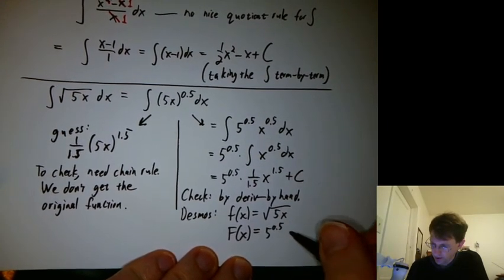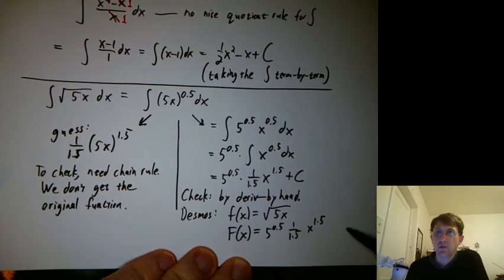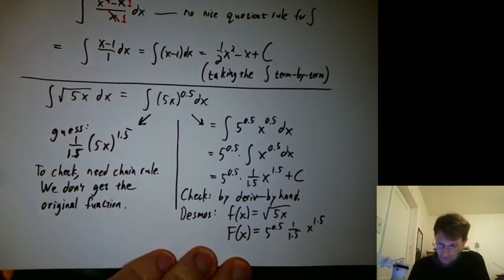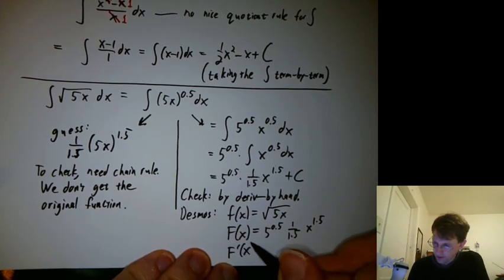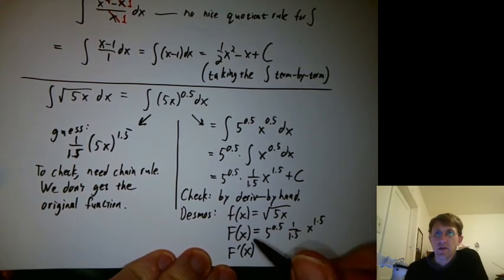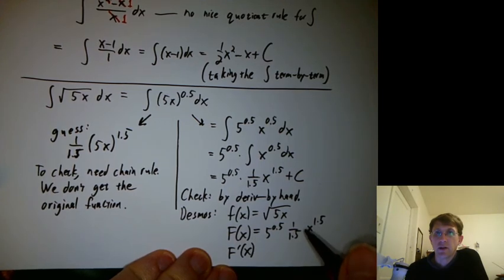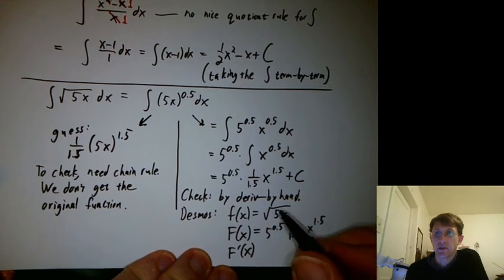Big F of x equals what I got here. 5 to the 0.5, 1 over 1.5, x to the 1.5. And I actually wouldn't type the plus C there. And then if I say big F prime of x, what should that do? The derivative of my antiderivative should exactly overlap little f of x.